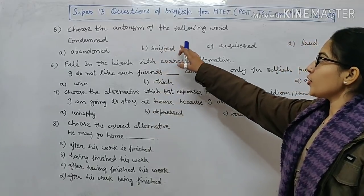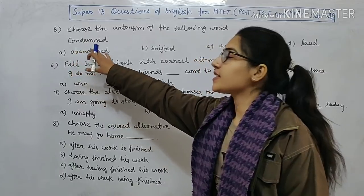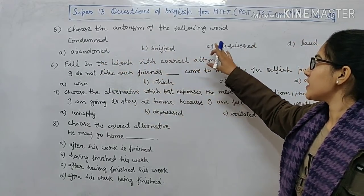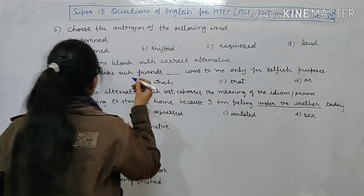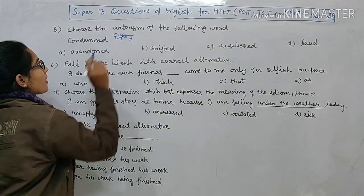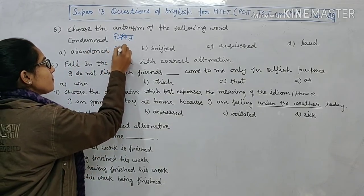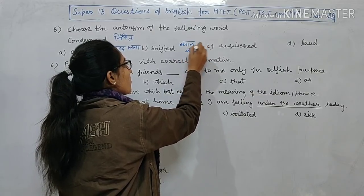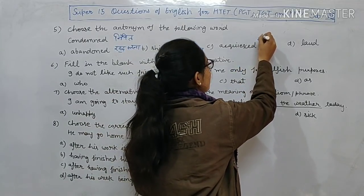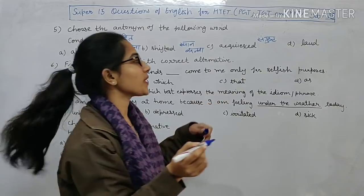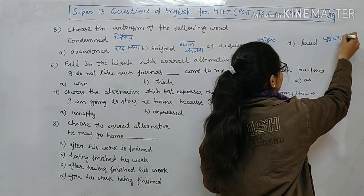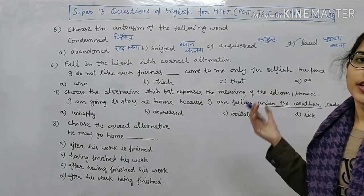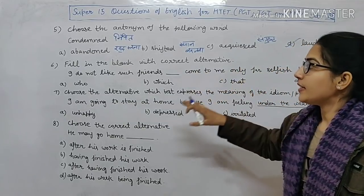Next question: choose the antonym of the word 'condemn'. Condemn means nindaa karna (to criticize/reproach). Option A is 'abundant' — meaning bharpoor. Option B is 'shifted' — meaning sthan badalna. Option C is 'acquit' — meaning santusht. Option D is 'laud' — meaning prachansaa karna, taarif karna (to praise). The antonym of condemn is laud — option D is the right answer.